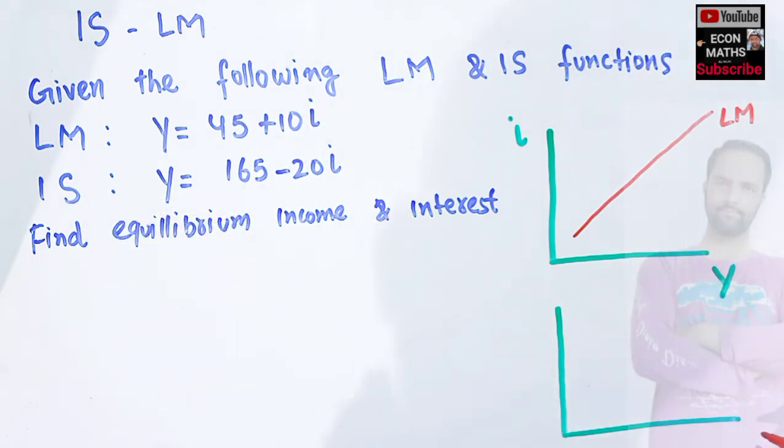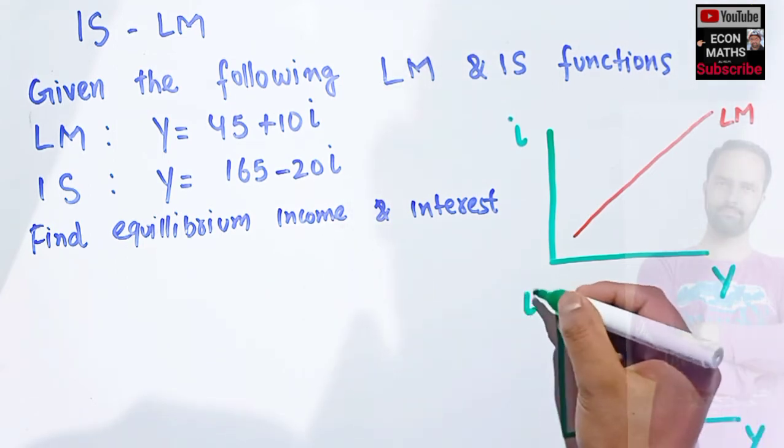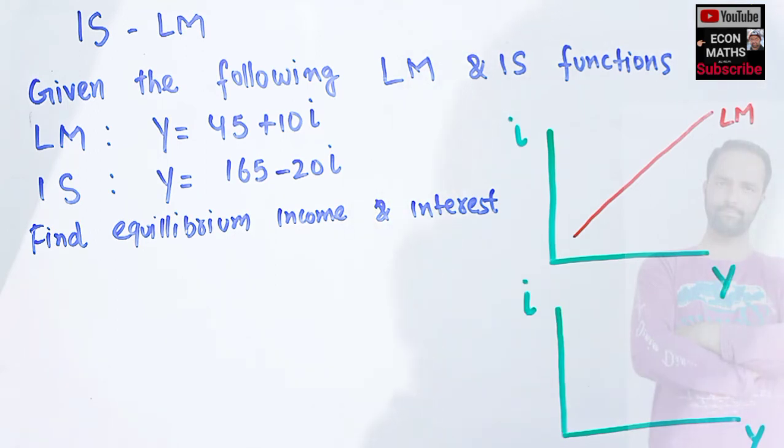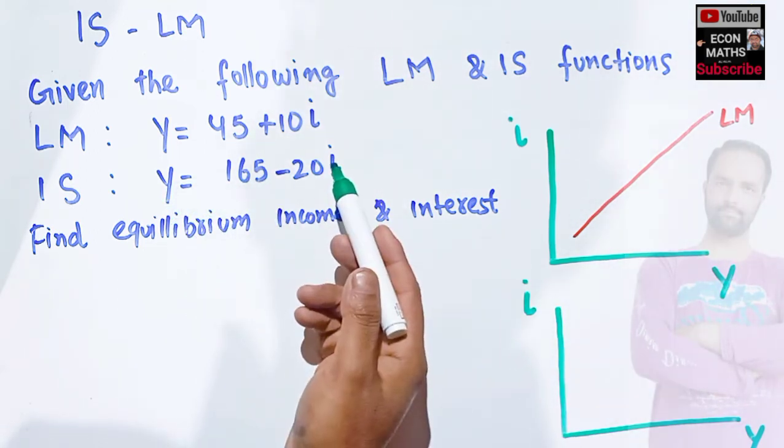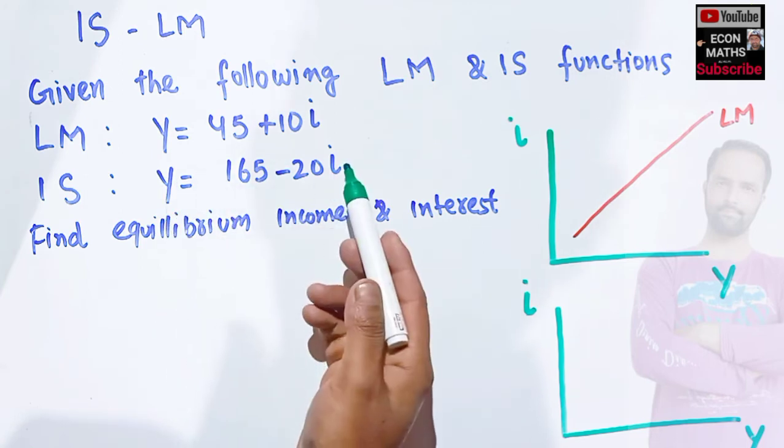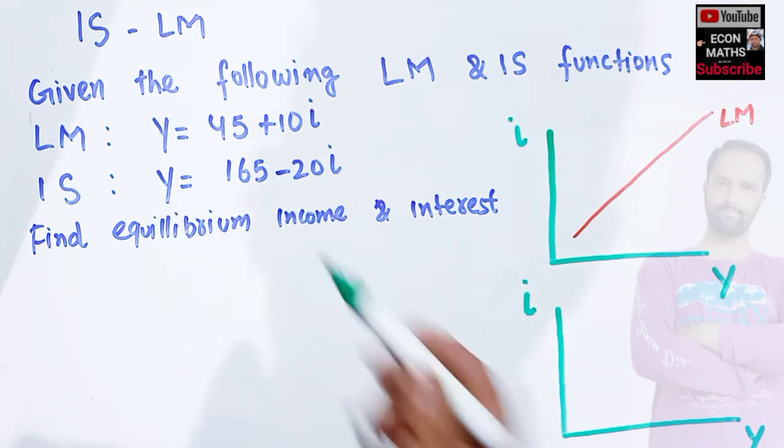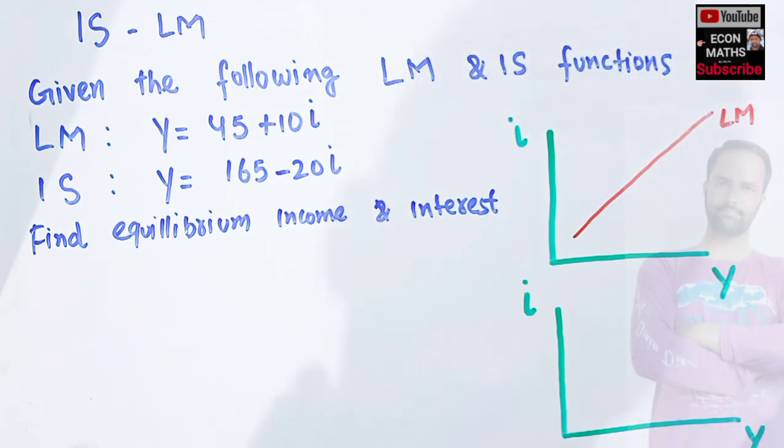Similarly, we have the IS function. We have level of income on the horizontal side and rate of interest on the vertical side. We have a negative relationship between the level of income and rate of interest because we have a negative sign here. Let's say it looks like this. This is our IS function.